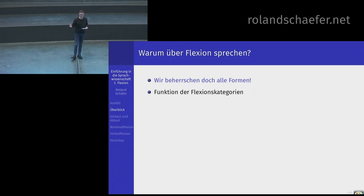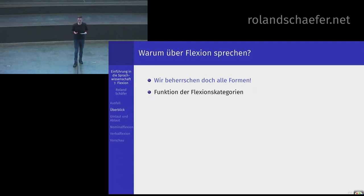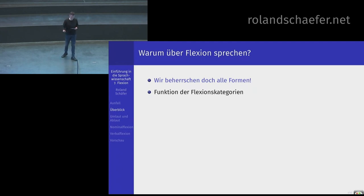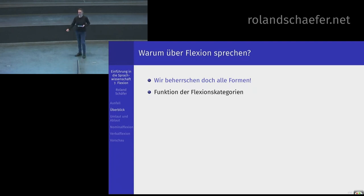Sie können alle Deutsch. Selbst wenn Sie nicht Deutsch als Erstsprache haben – um hier teilnehmen zu können, wenn Sie zum Beispiel Erasmus oder einen anderen Austausch machen, müssen Sie ein bestimmtes Zertifikat haben, DSH 3 oder so. Das heißt, Sie können das im Grunde alles. Sie können Deutsch sprechen und die Formen bilden. Wir reden aber auch explizit über die Funktion von Flexionskategorien – darüber haben Sie vielleicht noch nicht wirklich nachgedacht. Und ich sage Ihnen gleich, warum das wichtig ist.